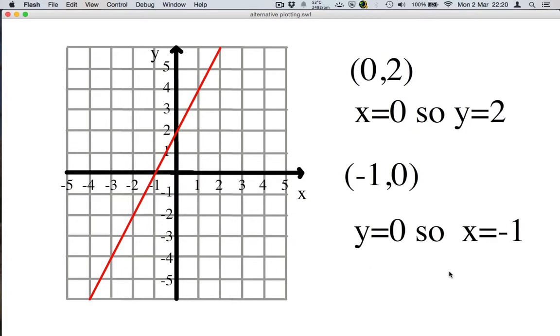So this has given us two points. Now to draw any straight line, all we need is two points. So this is a nice quick way of finding out points so that we can draw the line. So let's see how this method works.